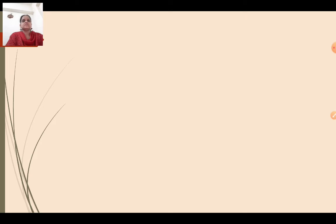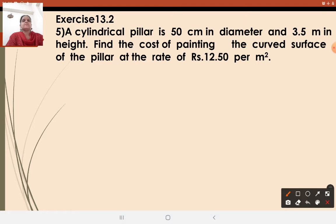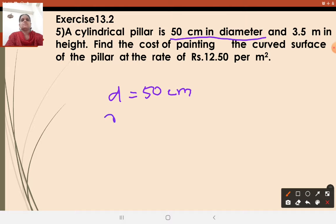Let us continue with Exercise 13.2, Question number 5. A cylindrical pillar is 50 cm in diameter and 3.5 m in height. Find the cost of painting the curved surface of the pillar at a rate of Rs. 12.50 per meter square. Always read the question carefully. Find out the given part and what you want to find. The diameter is given as 50 cm.